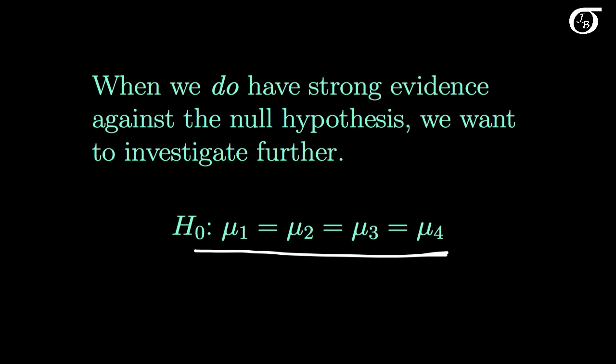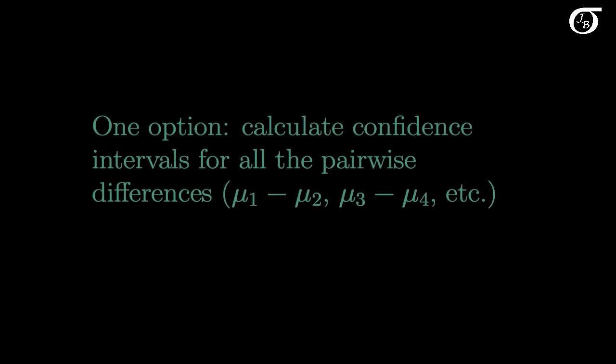So we typically want to investigate that further, to pin down where those differences lie. There is a variety of things that we can do at this point, but one option is to calculate confidence intervals for all the pairwise differences. So a confidence interval for mu 1 minus mu 2, a confidence interval for mu 1 minus mu 3, etc. A confidence interval for all those different pairwise differences. And there are some different ways of going about that. And I'll look at that in another video.